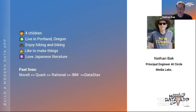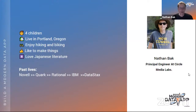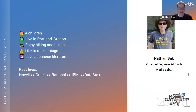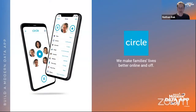Nathan introduces himself: Principal Engineer at Circle Media Labs, living in the Portland, Oregon area with his wife and four children. It's not yet 7 a.m. on a Saturday morning for him. He enjoys hiking, biking, woodworking, tinkering with microprocessors, and Japanese literature. Previously, he worked at Novell, Quark, Rational, IBM, and even DataStax, where he worked on the Astra project.